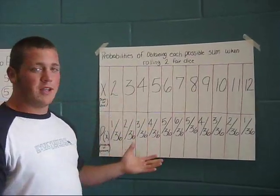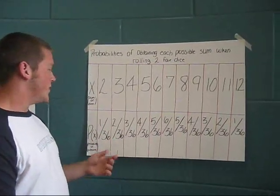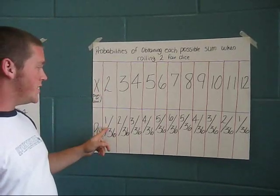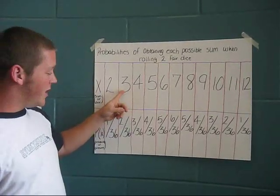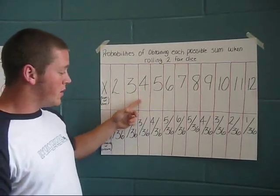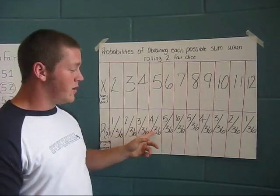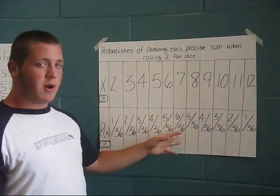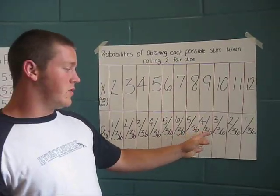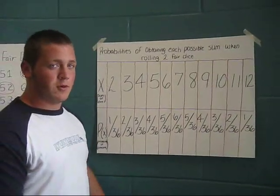This chart shows the probability of rolling numbers 2 through 12 on 2 fair dice. This shows the probability of rolling a 2 is 1 out of 36. The probability of rolling a 3 is 2 out of 36, 4 is 3 out of 36, 5 is 4 out of 36. And all the way up to 7, which has the greatest probability, it's 6 out of 36. And it goes back down gradually after that, showing that 7 has the highest probability of being rolled on 2 fair dice.